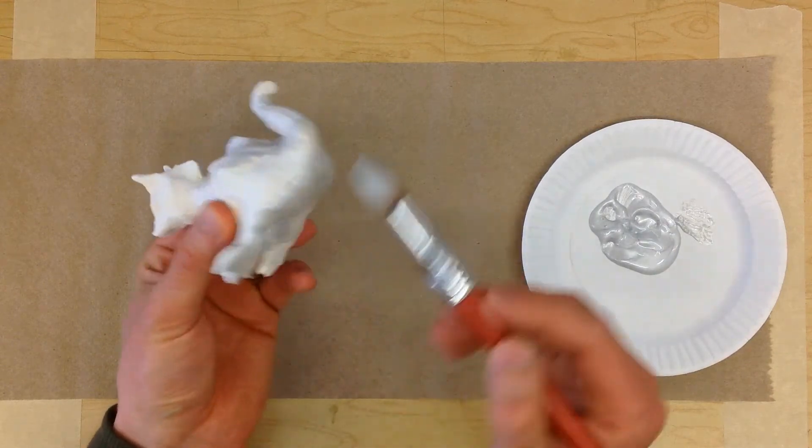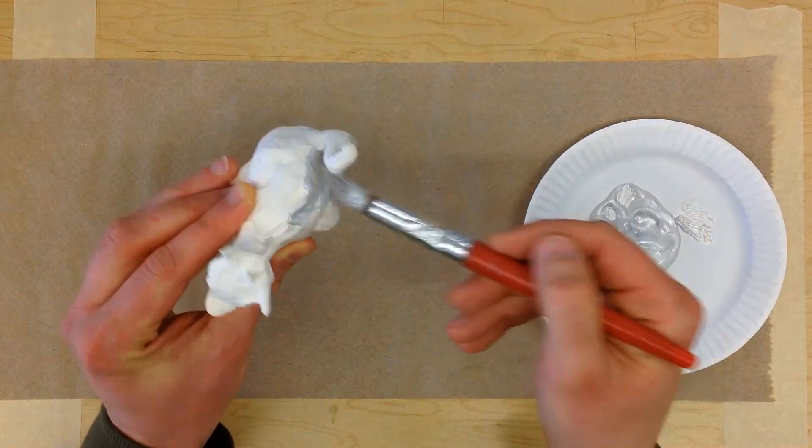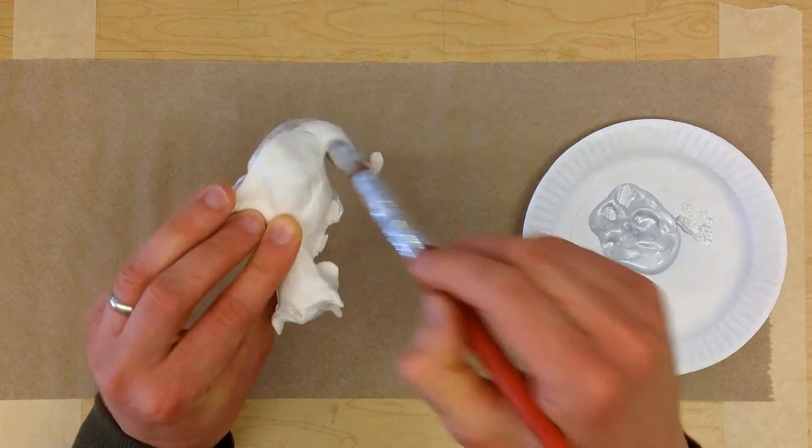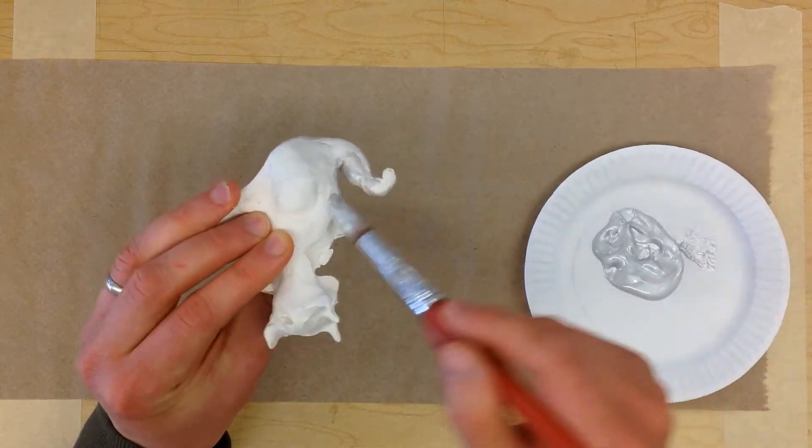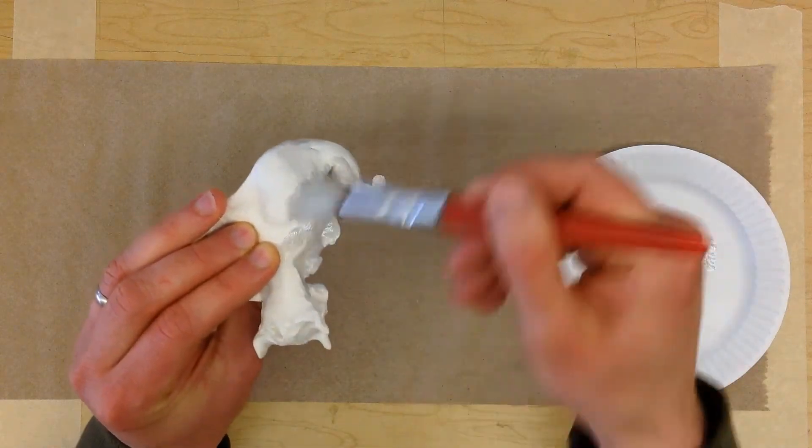That's why when you make a clay sculpture you don't glaze the bottom, but this is paint so it's okay. Just paint the whole thing, and when it's done we'll let it dry and move on to the next step.